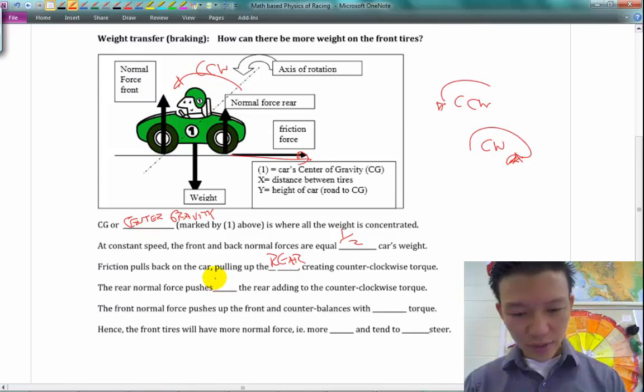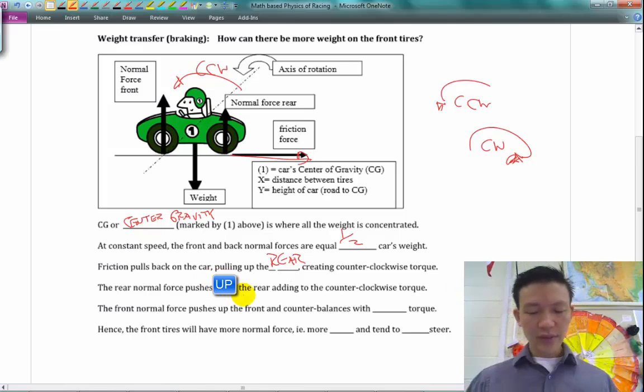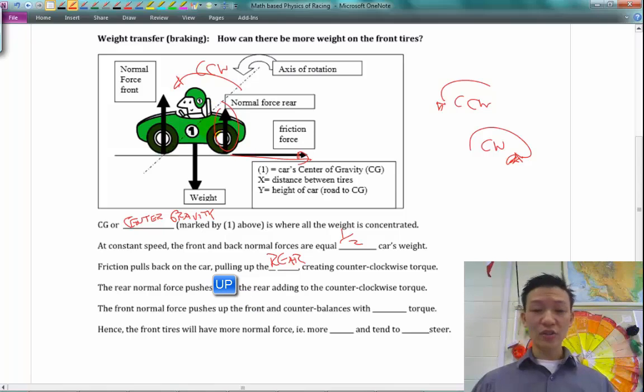The rear normal force pushes up, because normal force always pushes up, as you can see right here. Adding to the counterclockwise torque there. So you're just losing more grip overall.